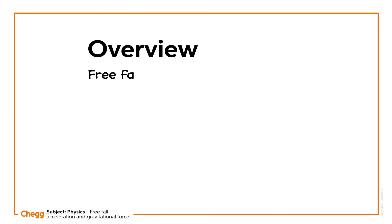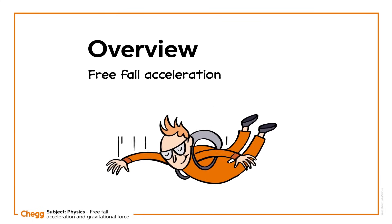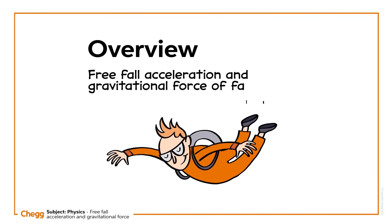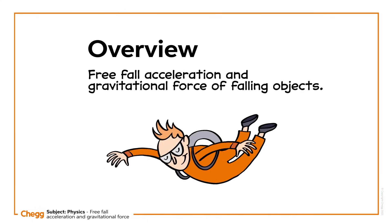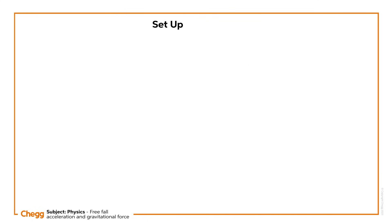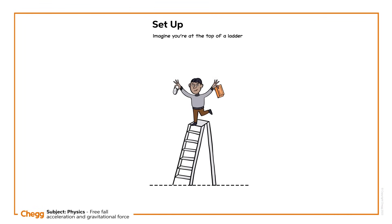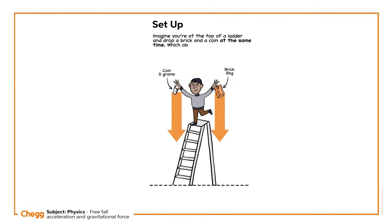Today we're learning about free fall acceleration and the gravitational force of falling objects. To introduce the topic, here's a thought experiment. Imagine you're at the top of a ladder. From your high up position, you hold out a two kilogram brick and a coin of five grams and you drop them at the same time. What do you expect to happen? Which object hits the ground first and why?